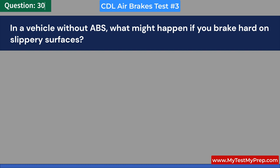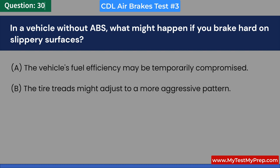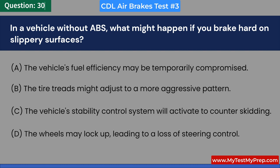In a vehicle without ABS, what might happen if you brake hard on slippery surfaces? A. The vehicle's fuel efficiency may be temporarily compromised. B. The tire treads might adjust to a more aggressive pattern. C. The vehicle's stability control system will activate to counter skidding. D. The wheels may lock up, leading to a loss of steering control. Answer: D. The wheels may lock up, leading to a loss of steering control.